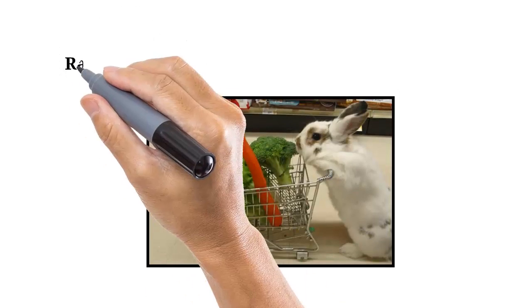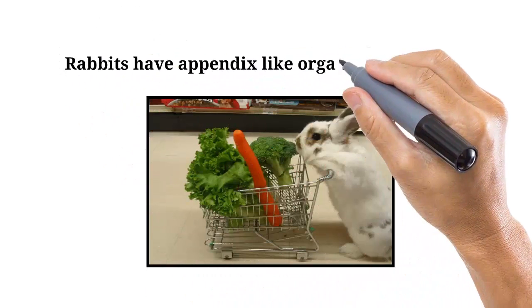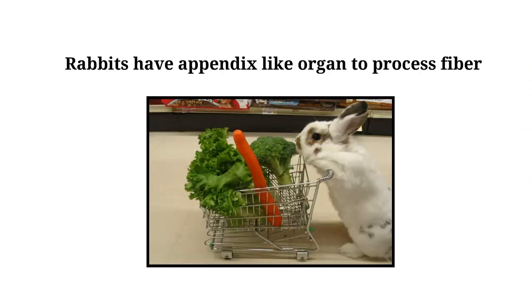This theory is supported by the fact that some modern animals have similar organs that function to process fiber just as the appendix might have done for our ancestors.